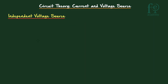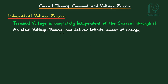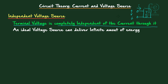Now let us look at the independent voltage source. In an independent voltage source, the terminal voltage is completely independent of the current through it. We take a two-terminal device and when we measure the voltage across it, it is independent of the current. Whatever voltage we want, we will get — we are not bothered about the current. An ideal voltage source can deliver infinite amount of energy, since P equals V times I and voltage is independent of current.